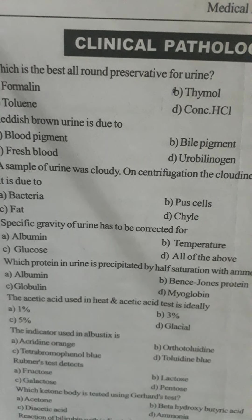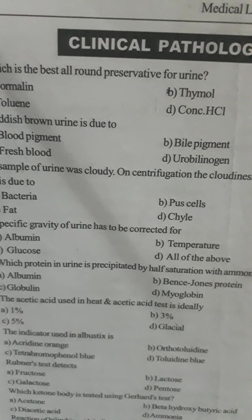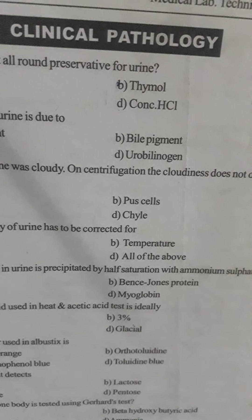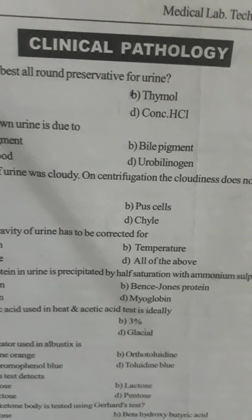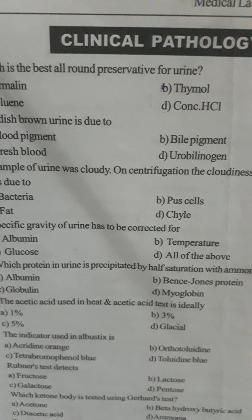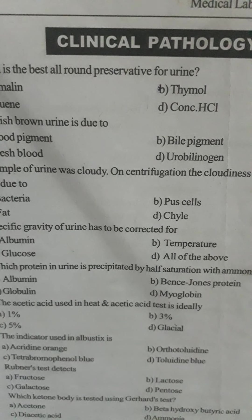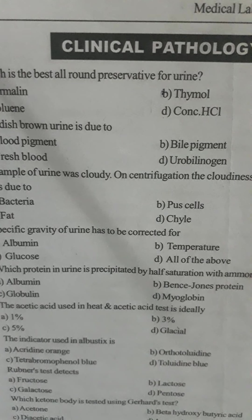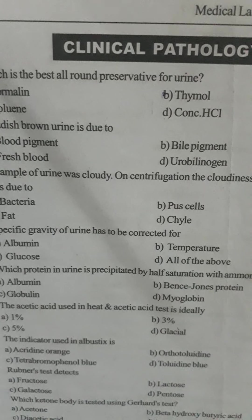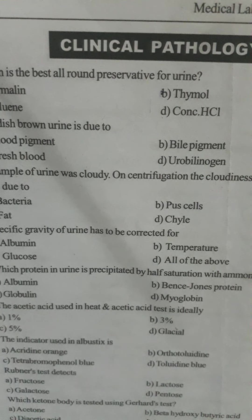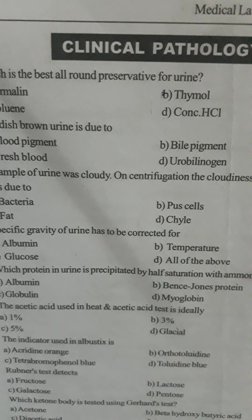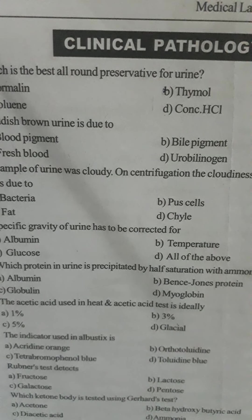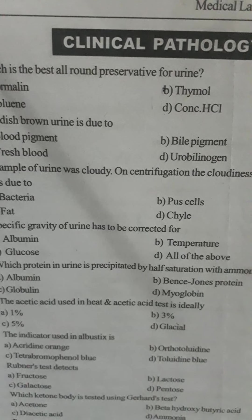Question number five: which protein in urine is precipitated by half saturation with ammonium sulfate? Option A: albumin, Option B: Bence Jones protein, Option C: globulin, Option D: myoglobin. The answer is Option C, globulin.